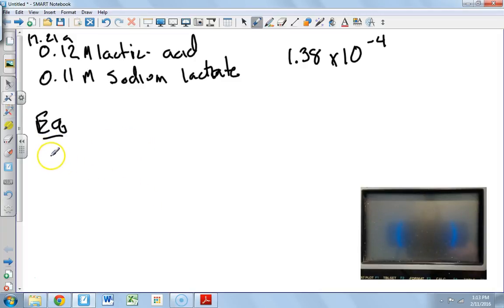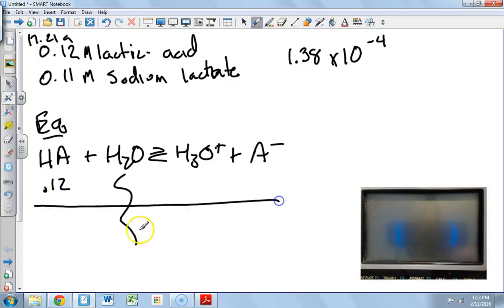Now we do our equilibrium step. We don't know the formula of lactic acid. Actually, it doesn't matter what the formula for lactic acid is. All it needs to be is a weak acid. Is it on the list of strong acids? Nope, then it's a weak acid. HA plus water is in equilibrium with H3O plus plus A minus. So now it's 0.12, water doesn't matter. Let me draw my IC chart. This is 0 and this is 0.11.